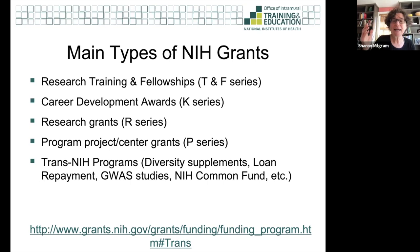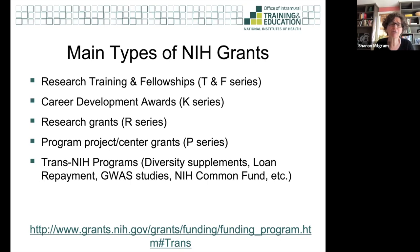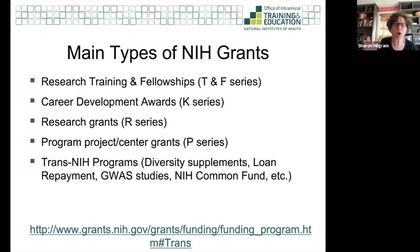P grants pull together multiple individuals at an institution to tackle a big complex problem. At Chapel Hill, we had a program project grant on cystic fibrosis to bring basic scientists and clinical scientists together. At the start of my career, I got a small starter grant from a Center for GI Biology and Disease — that was a P grant awarded to UNC. As a new investigator, you won't likely be PI of a program project or center grant, but you may benefit from it and eventually become co-PI or PI.